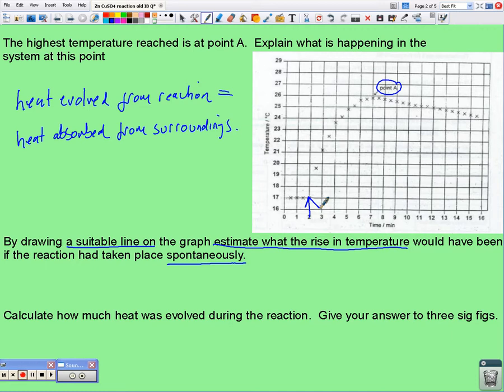You can see from the points on the graph that the temperature increased gradually to a maximum. That's because the particles of the zinc are not able to react with the copper sulphate all in one go, and we've got heat being lost to the surroundings.